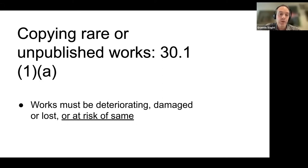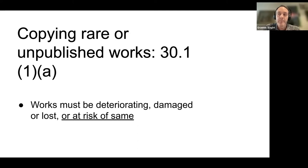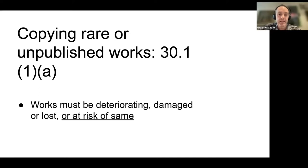Section 30.1(1)(a) defines a category of works eligible to be copied under 30.1. The first group are works that are rare, unpublished, and which are deteriorating, damaged, or lost, or at risk of those things. A clear example would be a piece of unpublished research software on a floppy disk from the 1980s or 90s. A rare published piece of software might also qualify — for example, a specific version of a game like Oregon Trail stored on a CD-ROM — pending examination of the commercial availability limitation.